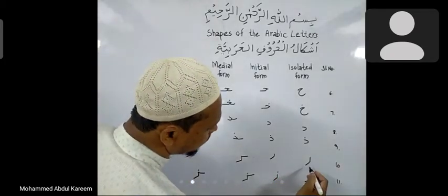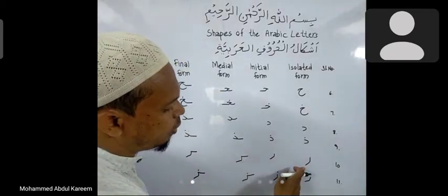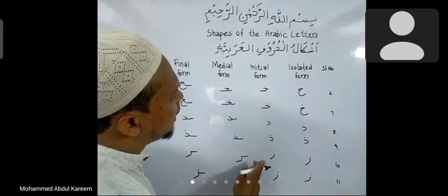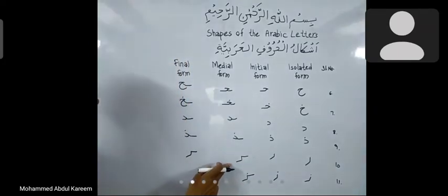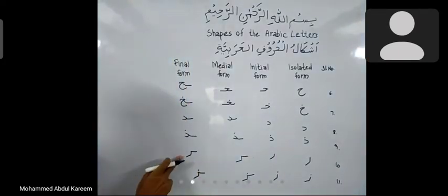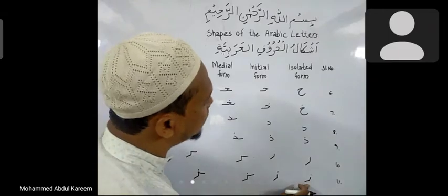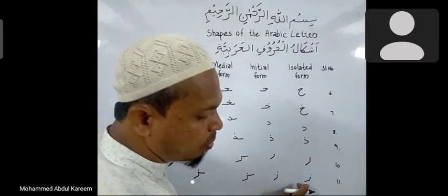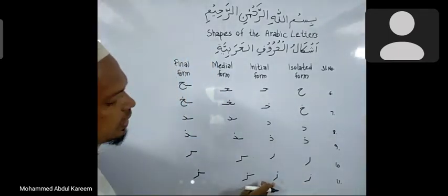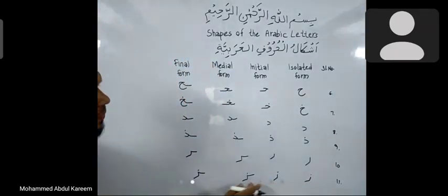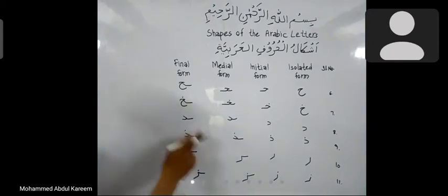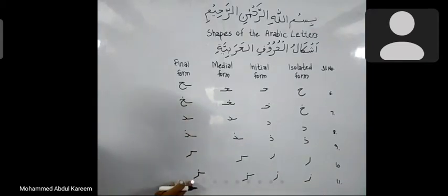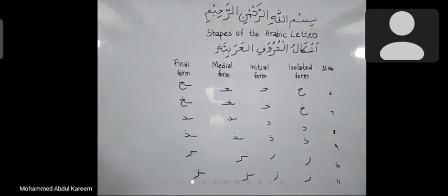Isolated form of ra, initial form of ra, medial form of ra, and final form of ra. Za: isolated form of za, initial form of za, medial form of za, and final form of za. Write these letters, then we will proceed towards the next letters.